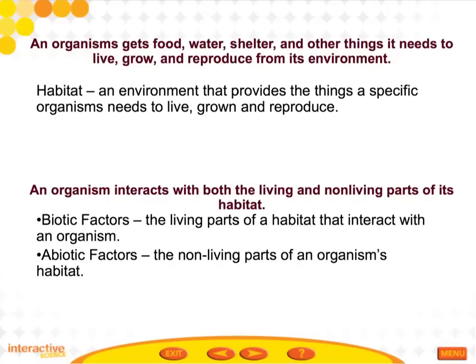Within a habitat, there are two different types of things that an organism will interact with — both living and non-living parts of the habitat. These are two very important key words. Biotic factors are the living parts of a habitat that interact with an organism, and abiotic factors are the non-living parts of an organism's habitat.